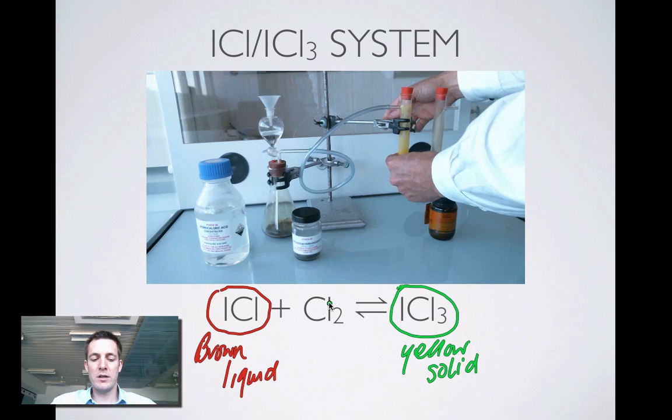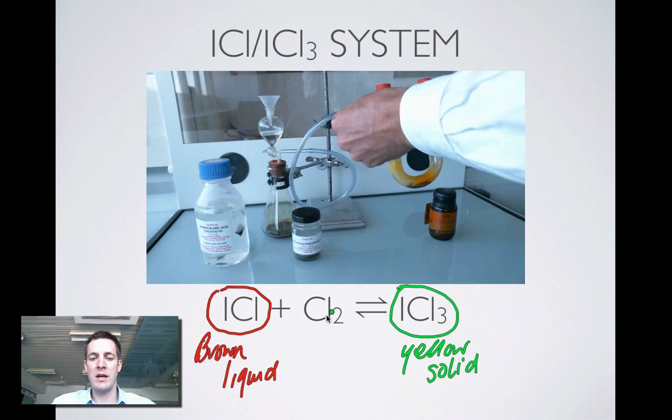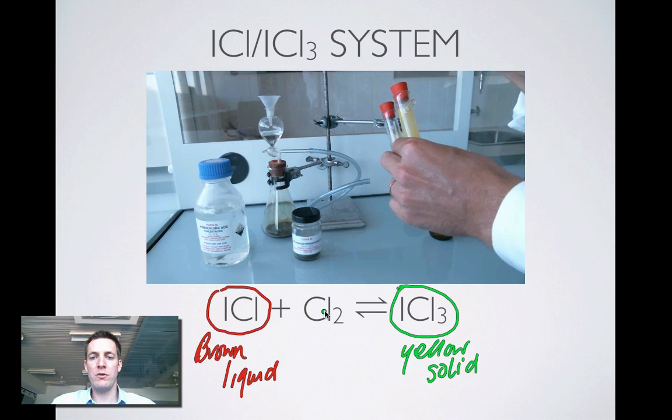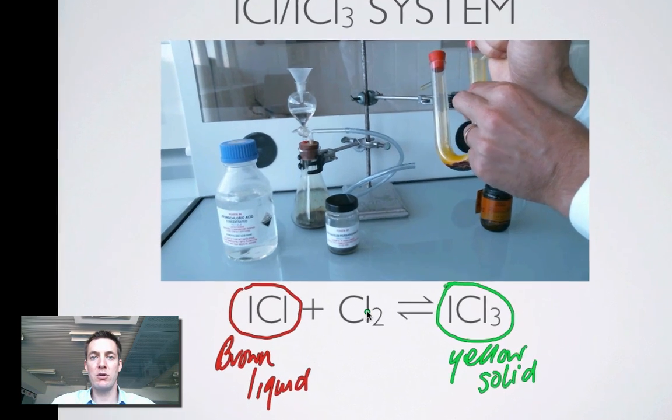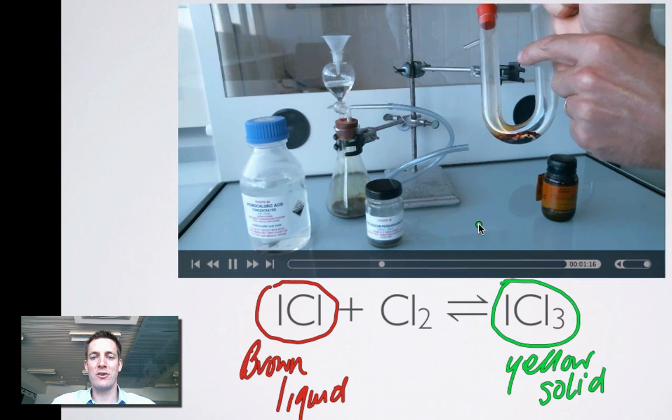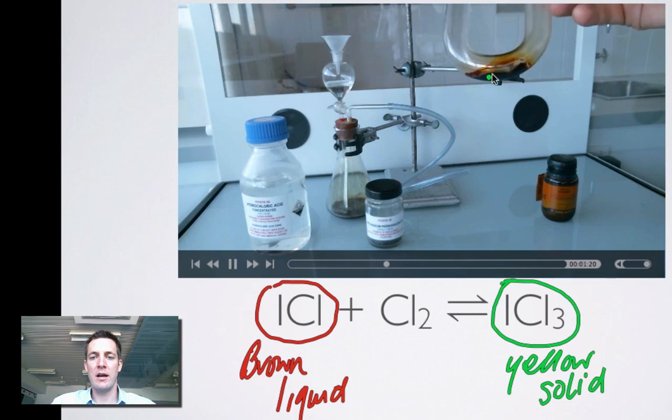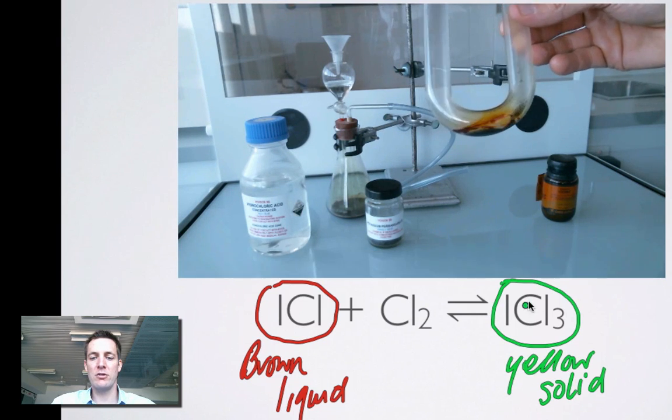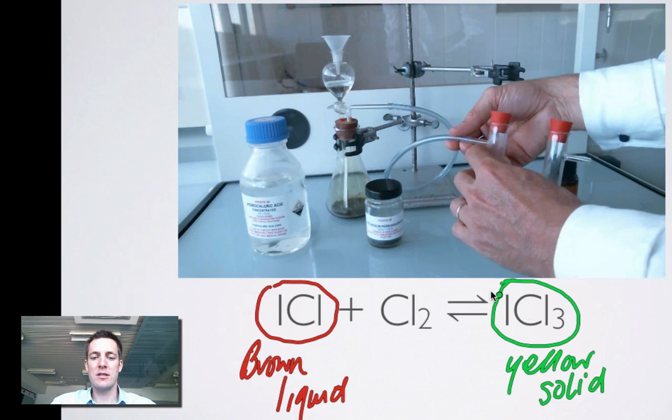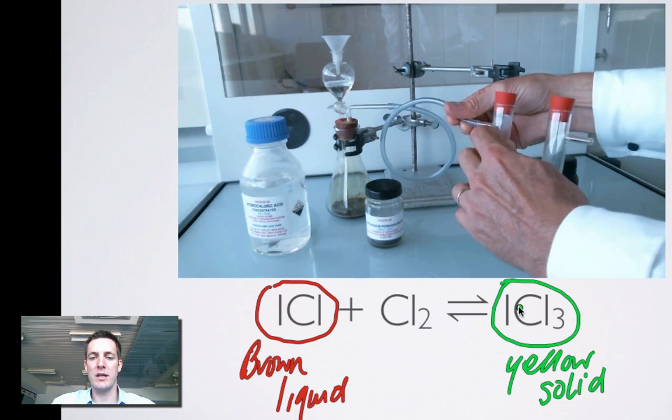So what we're going to do here in this experiment is we're going to observe what happens to this equilibrium system as we add and remove chlorine. The way we're going to remove chlorine here is by blowing through the U-tube. Doing this in a fume cupboard and trying not to breathe this stuff in. But we're blowing through the U-tube and we've removed the chlorine. And look what's happened. All that yellow solid has gone. We've removed chlorine and the system came over this way. It went to the brown liquid and away from the yellow solid.